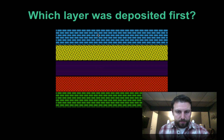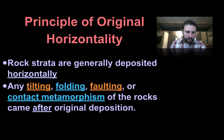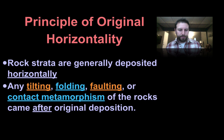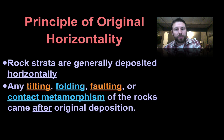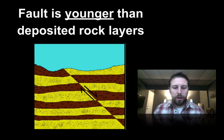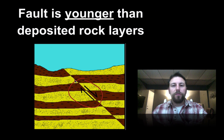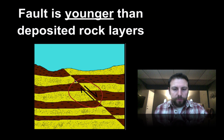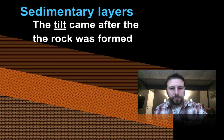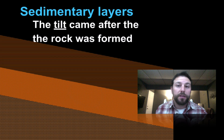We also have the principle of original horizontality. This says that sedimentary rocks depositing in water will be in horizontal layers. Anything that changes these horizontal layers had to come afterwards — things like tilting, folding, faulting, or contact metamorphism. For example, if we have a fault here, those layers had to be deposited first in order for the fault to occur — so the fault is younger than the deposited sedimentary layers.